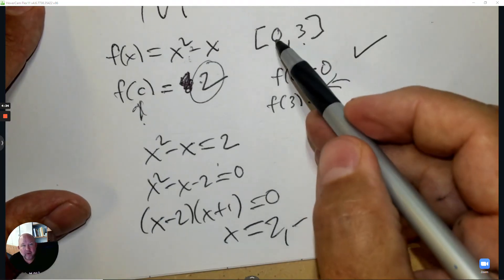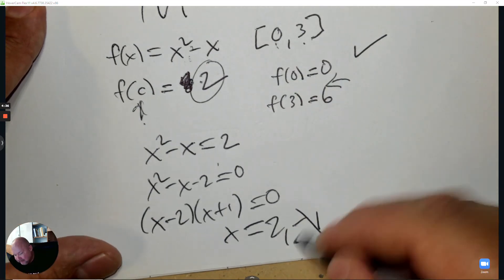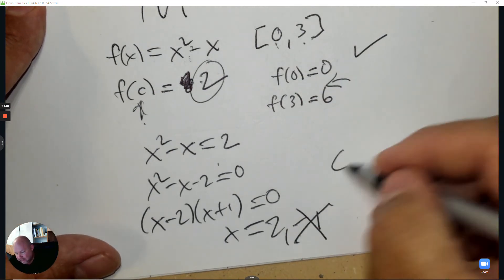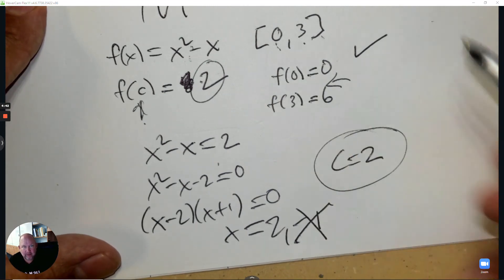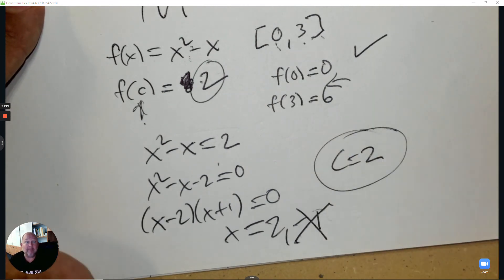But the interval goes from 0 to 3, so negative 1 is not an answer. The c value is 2 because that number is between 0 and 3. Negative 1 would not be correct.